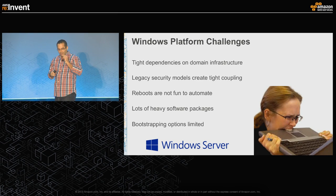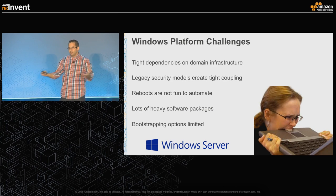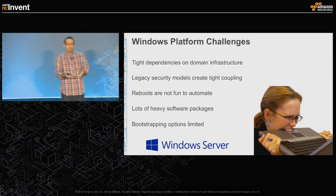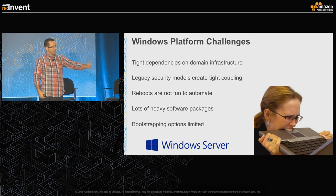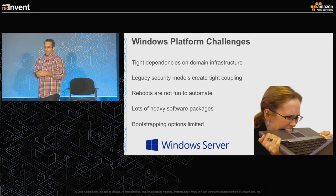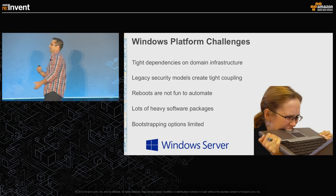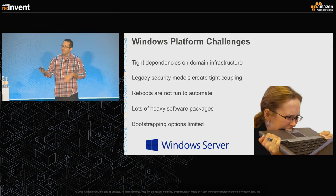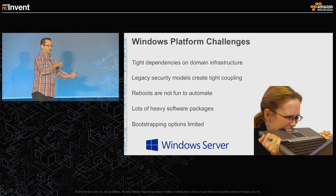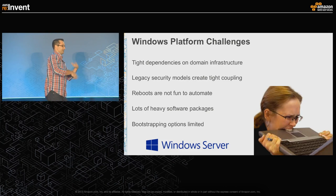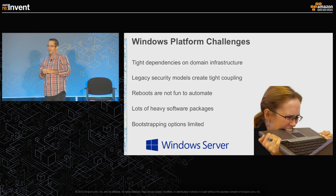I worked at Microsoft for six years, so I know these things. There are tight dependencies on domain infrastructure and legacy security models that get brought along — this speaks very much to the idea of moving Windows solutions and applications into AWS. Reboots are brutal to automate. There's a non-deterministic nature to something rebooting and starting back up. As a developer, you're writing a lot of if-conditionals to know if something got installed or didn't — and if you get that wrong, you reinstall it. It can be done, but it's painful.